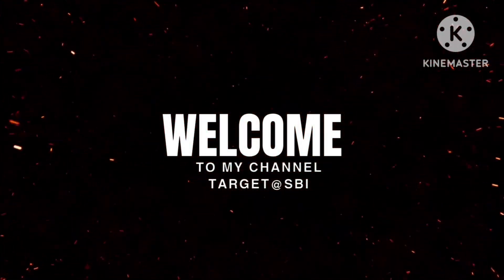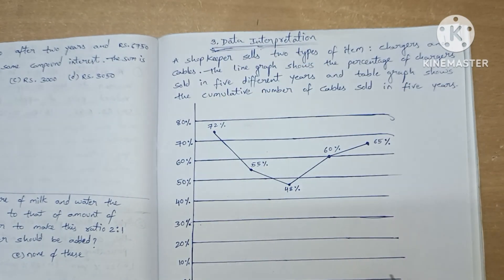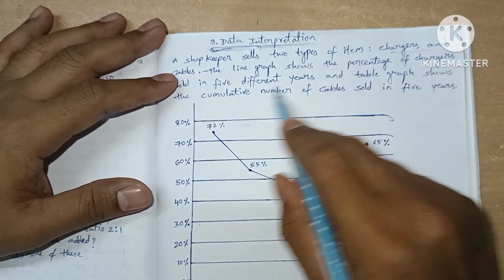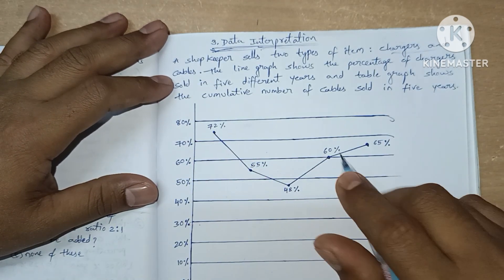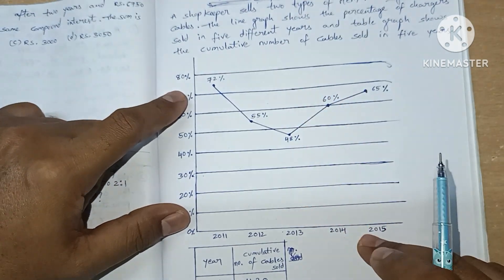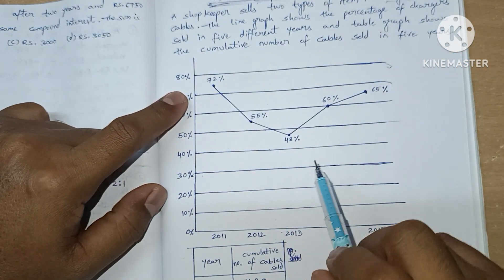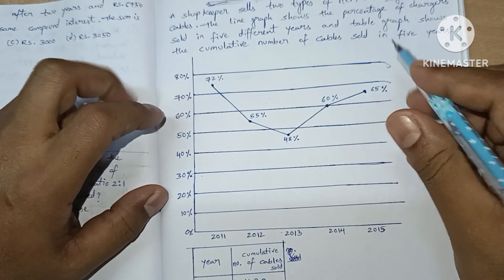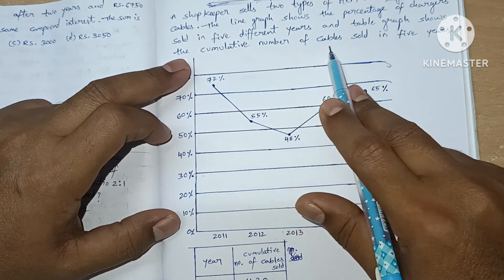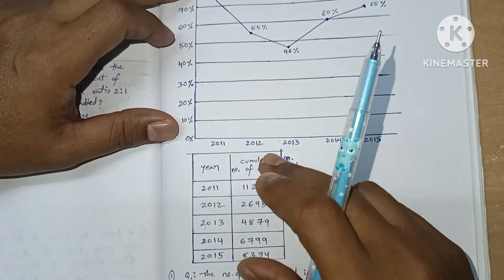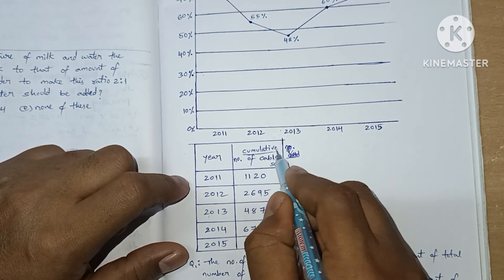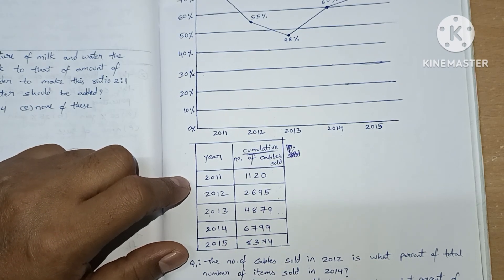Hello guys, welcome back to my YouTube channel Target SPI. Now we are going to see the third data interpretation. A shopkeeper sells two items: chargers and cables. The line graph shows the percentage of chargers sold in five different years, and the table graph shows the cumulative number of cables sold in five years. We must remember this is cumulative. Let's solve.